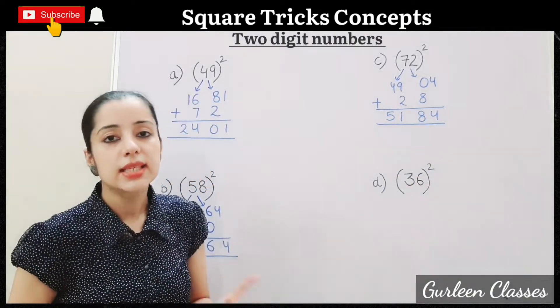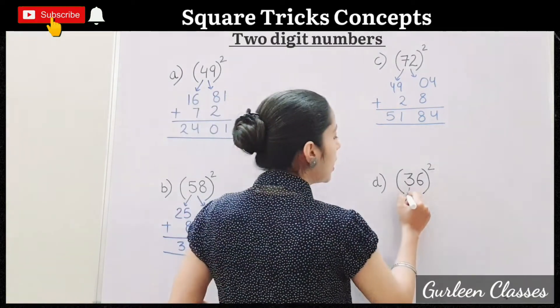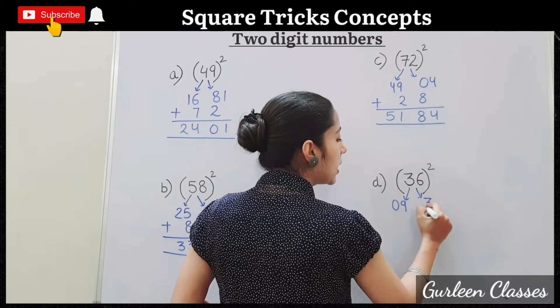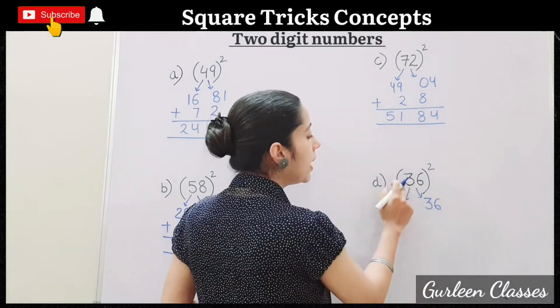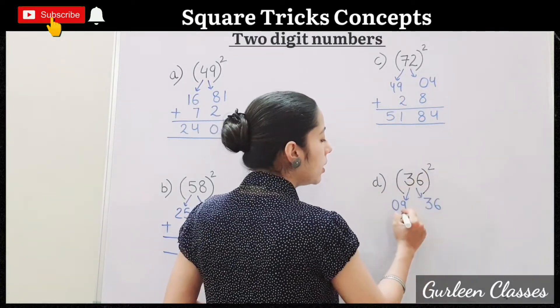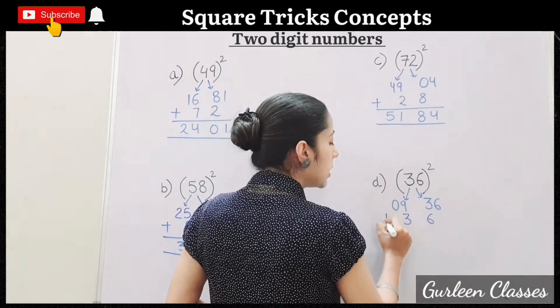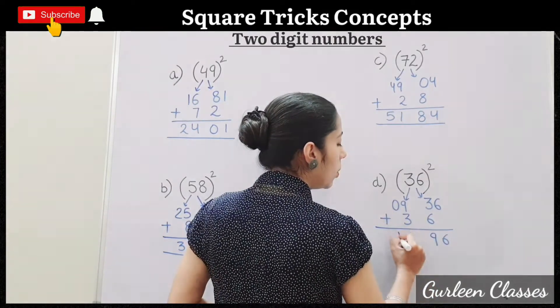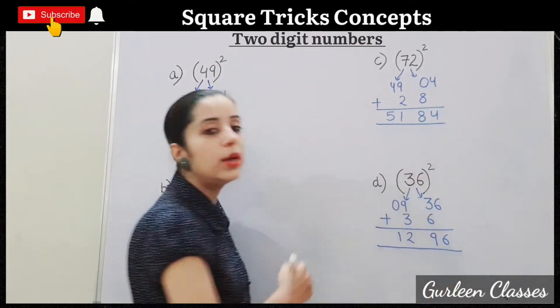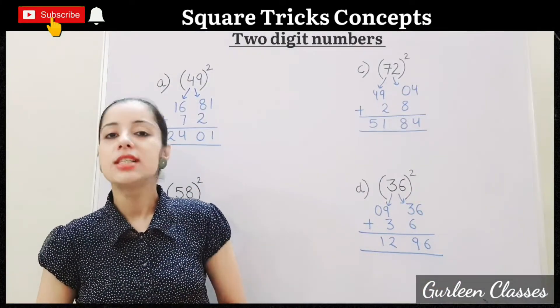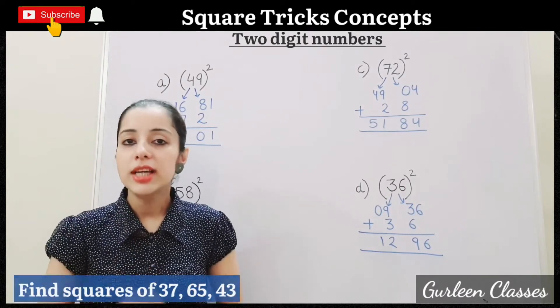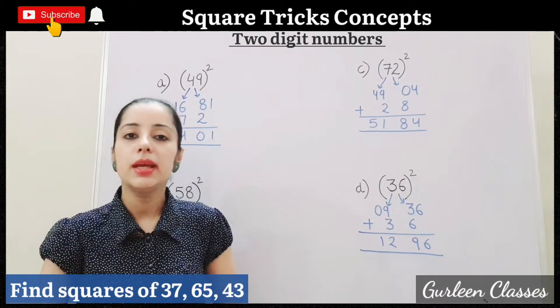D. 36 square. So 3 square, 3 threes are 9. 6 square, 6 sixes are 36. Now multiply 3 sixes are 18. We need to use 36. Third step we will add. 6, 9, 2, 1. Answer is 1,296. So I hope students now you can easily find out squares of any 2-digit number. Few questions I have given you on the screen, answer me in the comment box.